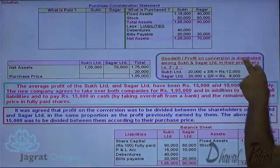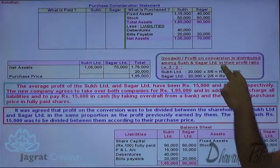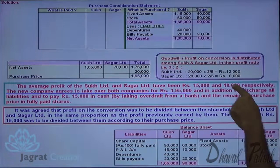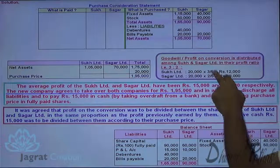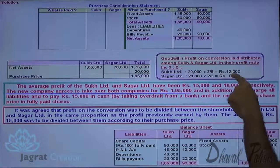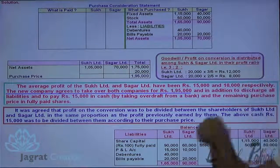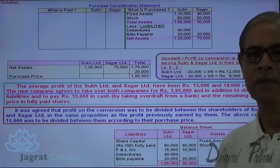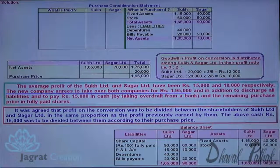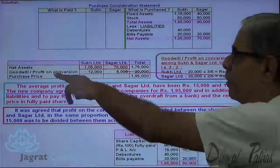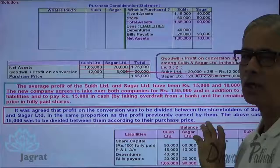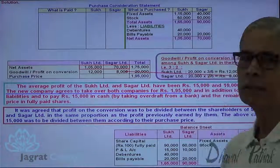This Rs. 20,000 goodwill, or profit on conversion, is distributed amongst Souk and Sagar in the profit ratio of 15:10, i.e., 3:2. So Souk Limited gets 3/5 of Rs. 20,000 = Rs. 12,000 and Sagar Limited gets 2/5 = Rs. 8,000. For the purchaser this is goodwill; for the vendor it is profit on conversion.